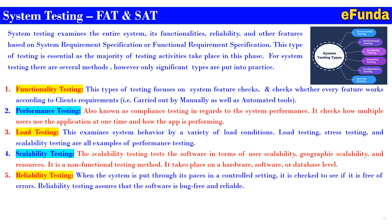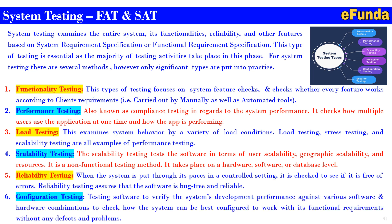Fifth: reliability testing. When the system is put through its paces in a controlled setting, it is checked to see if it is free of errors. Reliability testing assures that the software is bug-free and reliably available for the user. Sixth: configuration testing — testing software to verify the system's performance against various software and hardware combinations, to check how the system can be best configured to work with its functional requirements without defects.